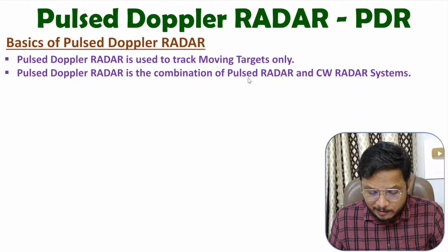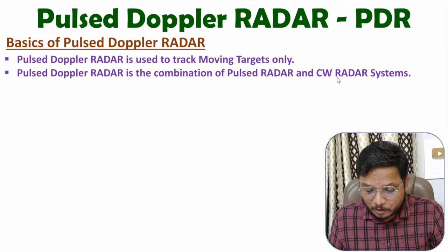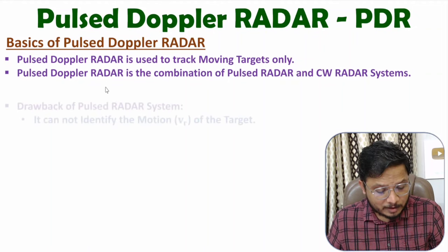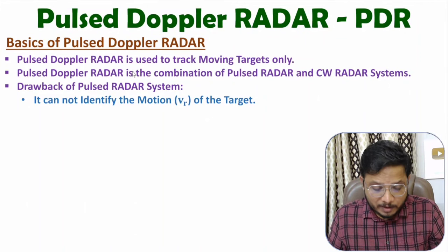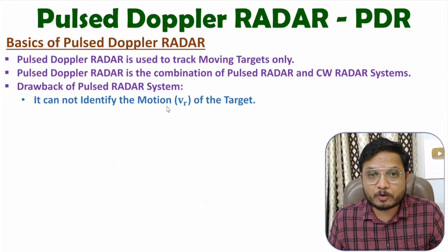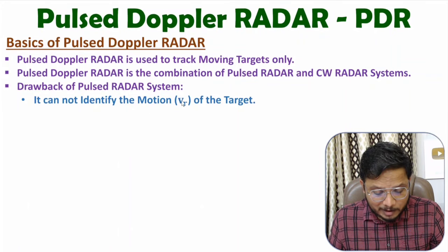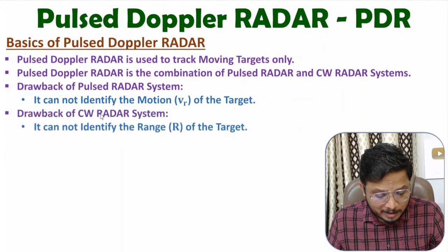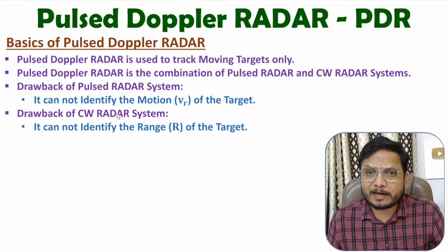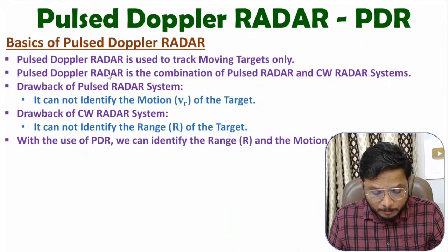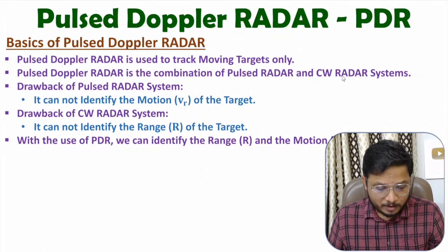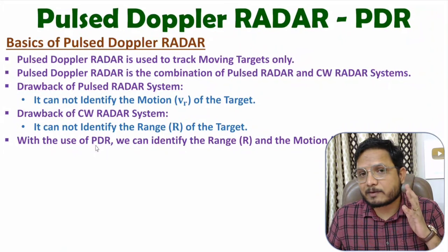There were a few disadvantages with Pulsed Radar and CW Radar that can be covered up with the use of this system. The drawback of Pulsed Radar is that we cannot identify motion — that is, relative velocity — of the target. While with CW Radar system, we cannot identify range. With PDR, we can identify both range as well as motion of the target.